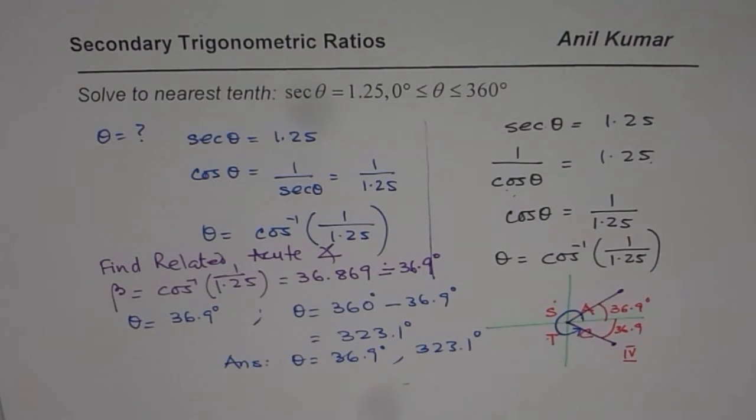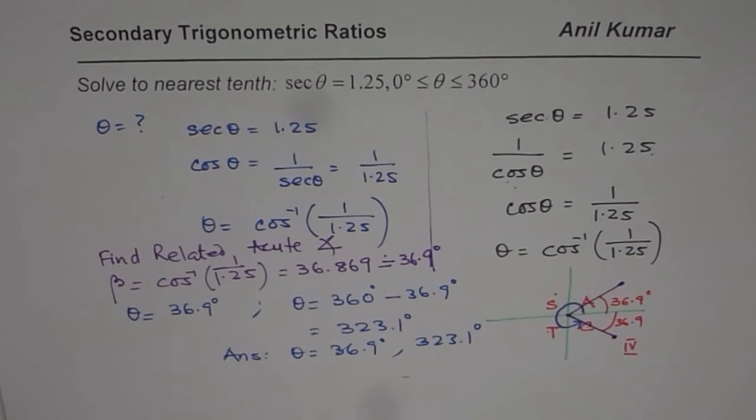So we get both these solutions. And that is how we should be finding the secondary trigonometric ratios as the situation is given to us. So that is how you should be doing it. I hope that helps. Thank you and all the best.